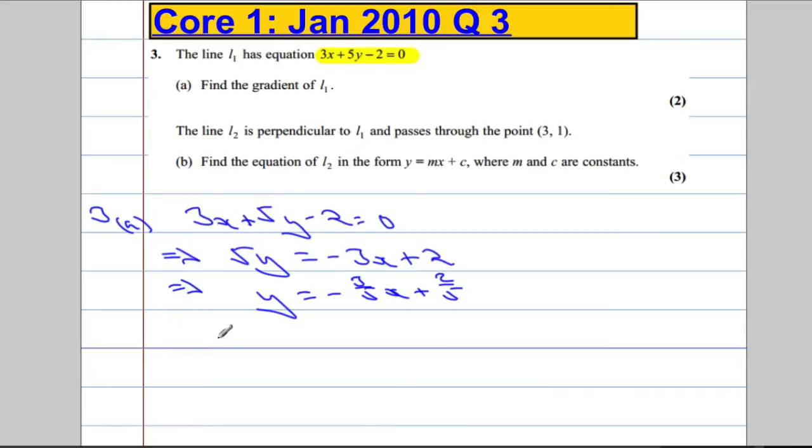And now that we've got it rearranged, I can say, therefore, m1, which is the gradient of L1, is equal to negative 3 over 5.